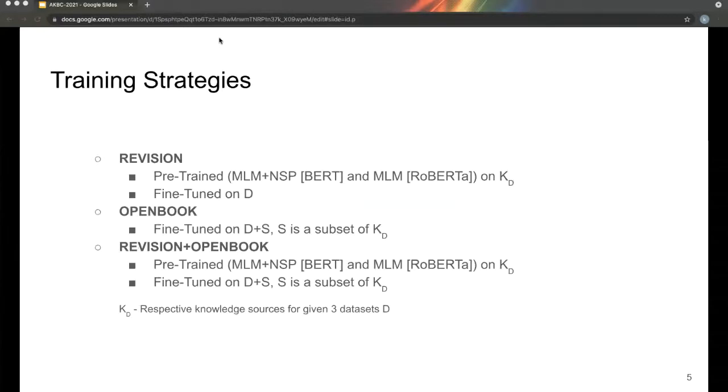We use three training strategies. In the revision strategy, we first pre-train the model with the knowledge sources and then fine-tune on the datasets. In the open book strategies, we only fine-tune the models on the datasets along with the extracted knowledge. The final strategy is a combination of both.